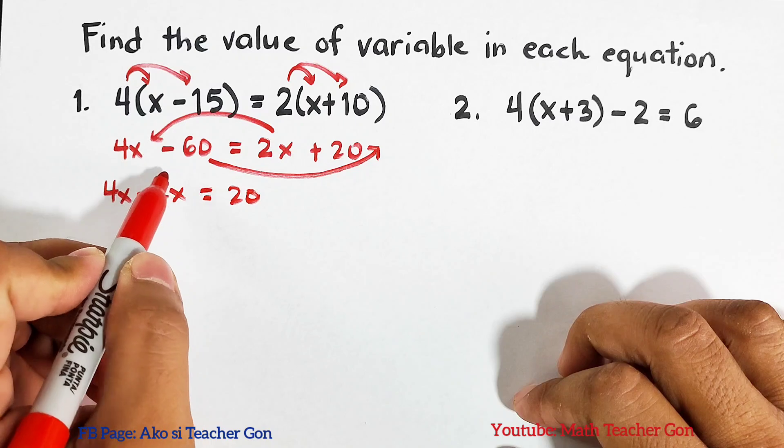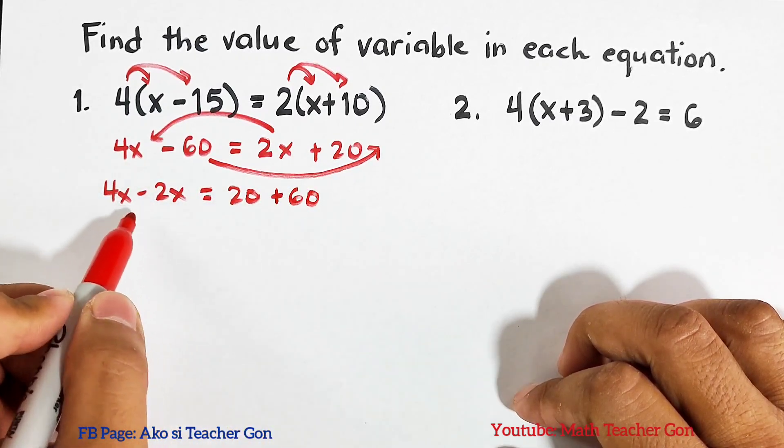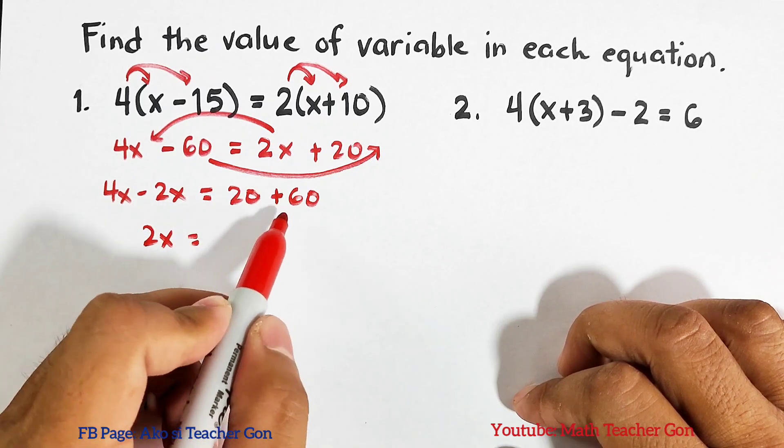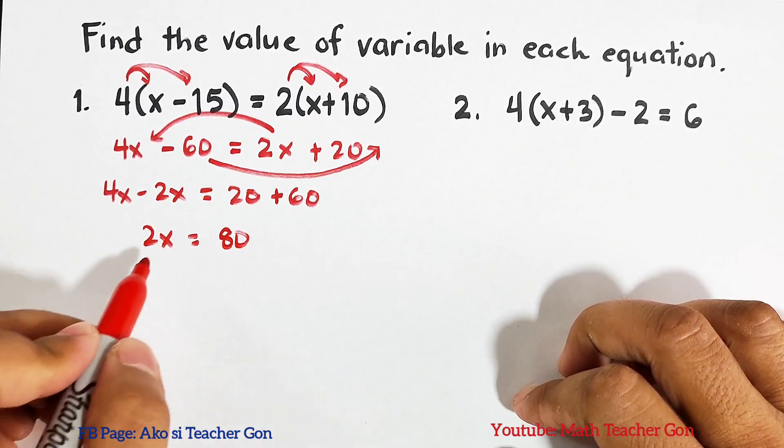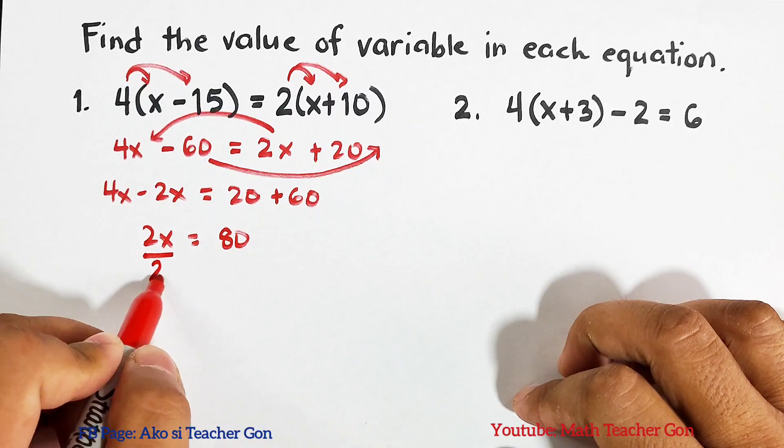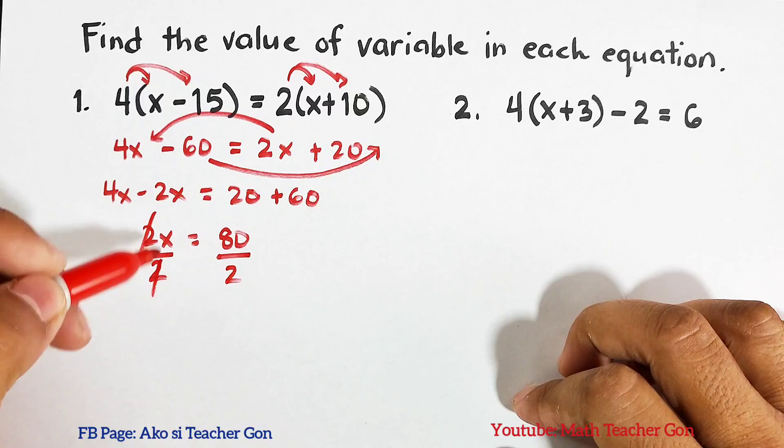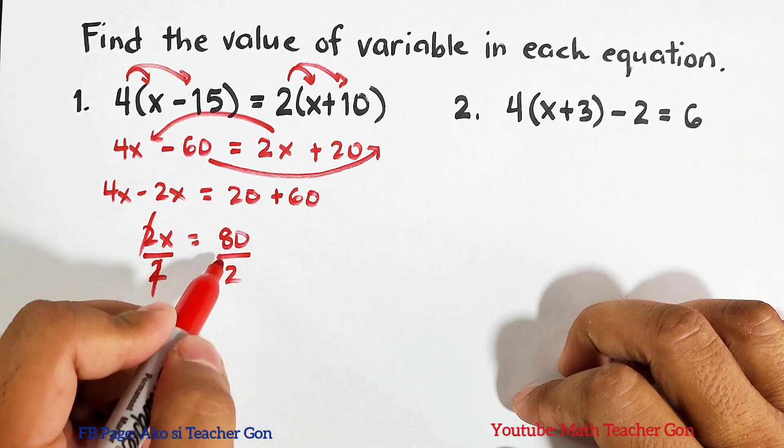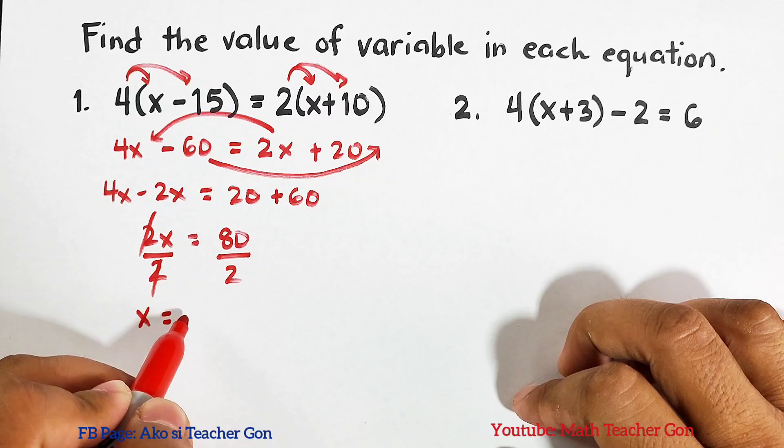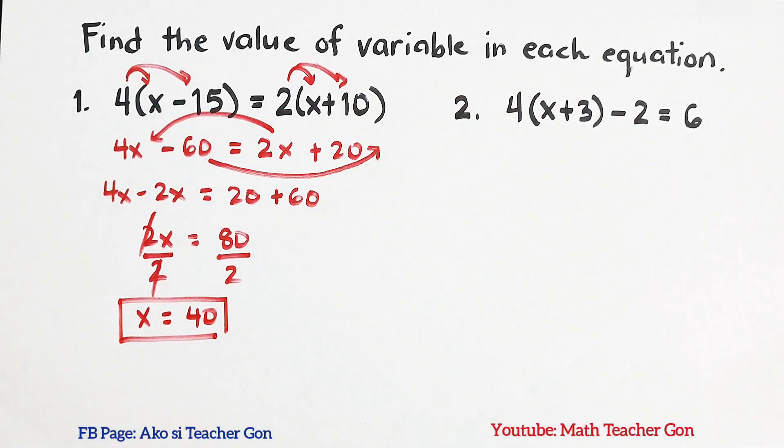So this is 2x is equal to 20 plus 60, that would be 80. Now we can divide both sides of the equation by 2. Cancel this out, cancel this out. Your x is equal to 80 divided by 2, which is equal to 40. And the value of x for this given equation is simply 40. Now let's move on with item number 2.